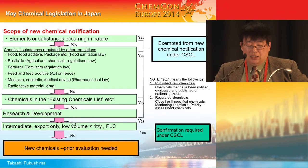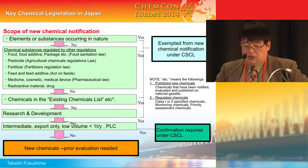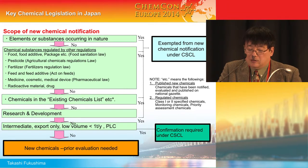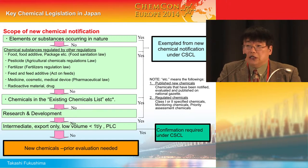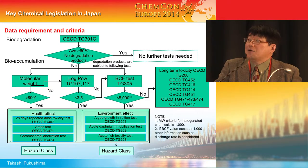After that, you have to check existing chemical risk and evaluated chemical risk. If the chemical is solely for research and development, you don't need to notify. But if your chemical is an intermediate, export only, low volume, or PLC, there is a specific confirmation scheme available. For the confirmation scheme, you basically don't need to provide hazard property information.